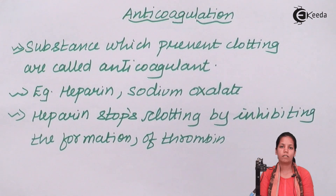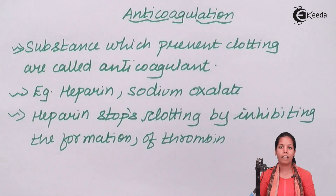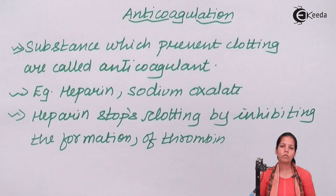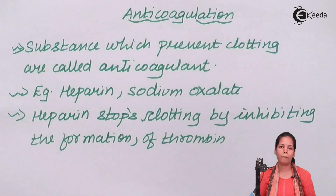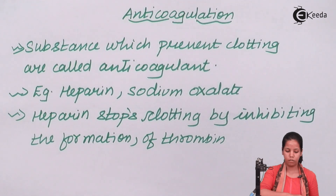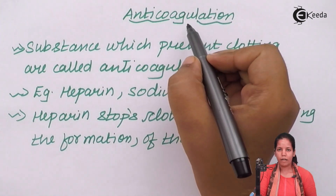Also, if they need serum or plasma separately for their test — it could be an antibody test or an antigenic test — depending on the requirement of the patient, they make sure that it happens. The most commonly used anticoagulants are sodium oxalate and heparin, which are widely used to stop blood coagulation.